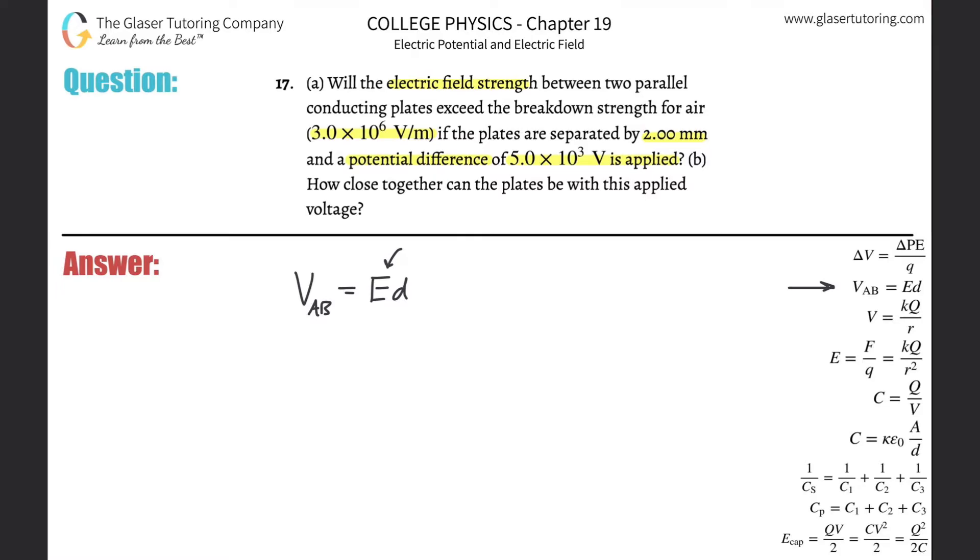Remember the electric field strength between two parallel plates is always constant anywhere between the two plates. So I can simply solve this for E. Algebraically, just divide out the D, so it's the voltage between A and B divided by the distance between the two plates, and they gave us the values. This is nice and easy.